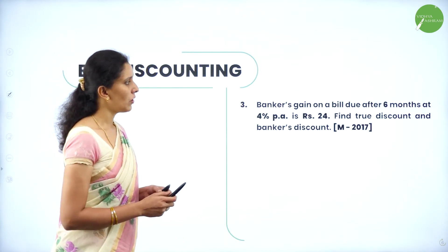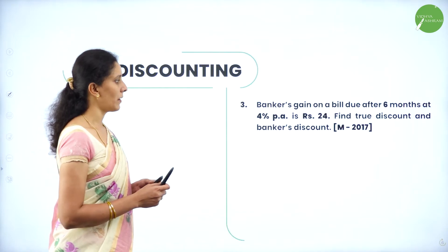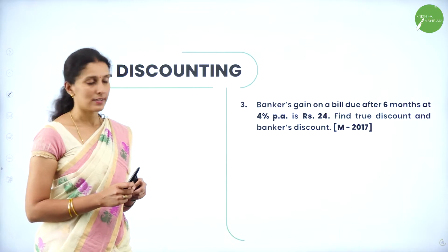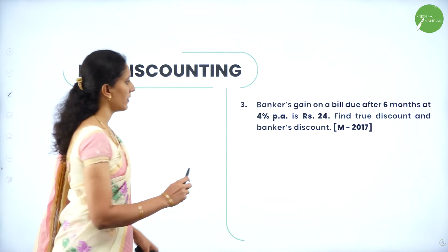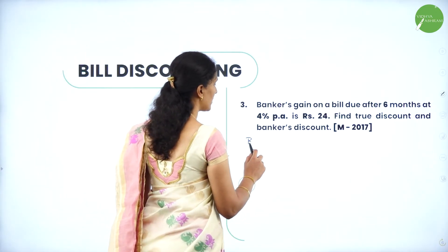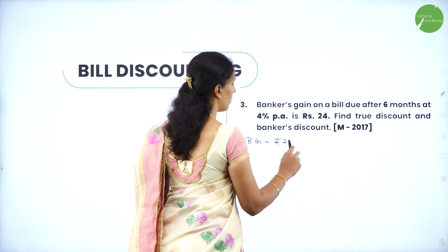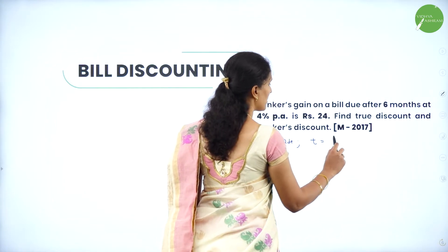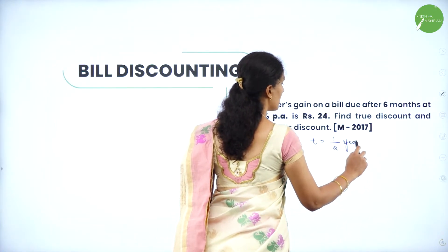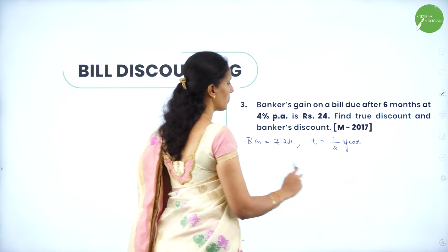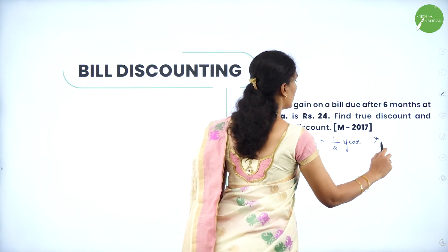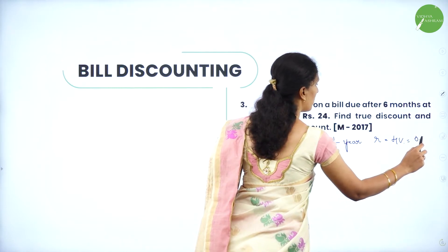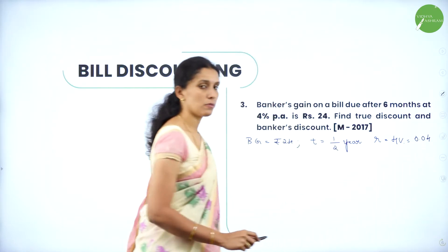Next question. Banker's gain on a bill due after 6 months at 4% per annum is Rs. 24. Find the true discount and banker's discount. The banker's gain is Rs. 24, time period is 6 months, which is 1/2 year. The rate of interest is 4% per annum, which is 0.04 in decimal.